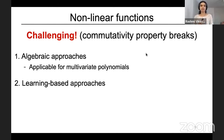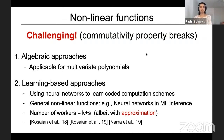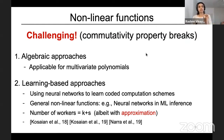However, handling nonlinear functions is highly challenging because the commutativity property just breaks. For handling nonlinear functions, there are two broad categories of approaches. One is algebraic approaches, currently applicable for the most general class of multivariate polynomials. The other class is learning-based approaches, where one uses machine learning and specifically neural networks to learn coded computation schemes, applicable for general nonlinear functions. Even for such nonlinear functions, learning-based approaches can tolerate s stragglers with just k plus s workers, but the decoded outputs are only approximate.